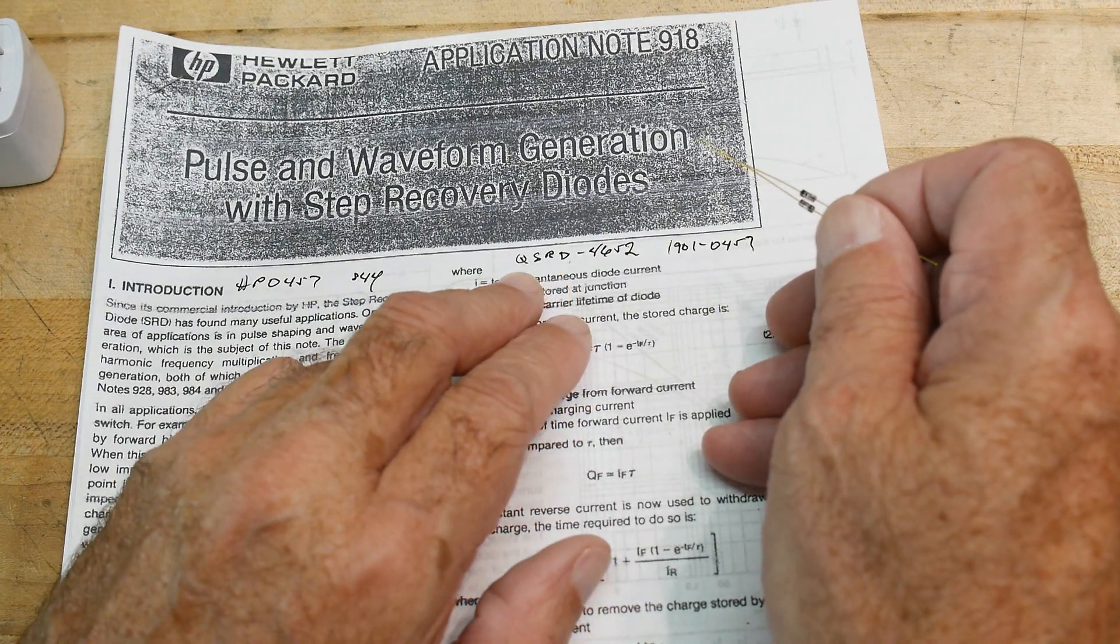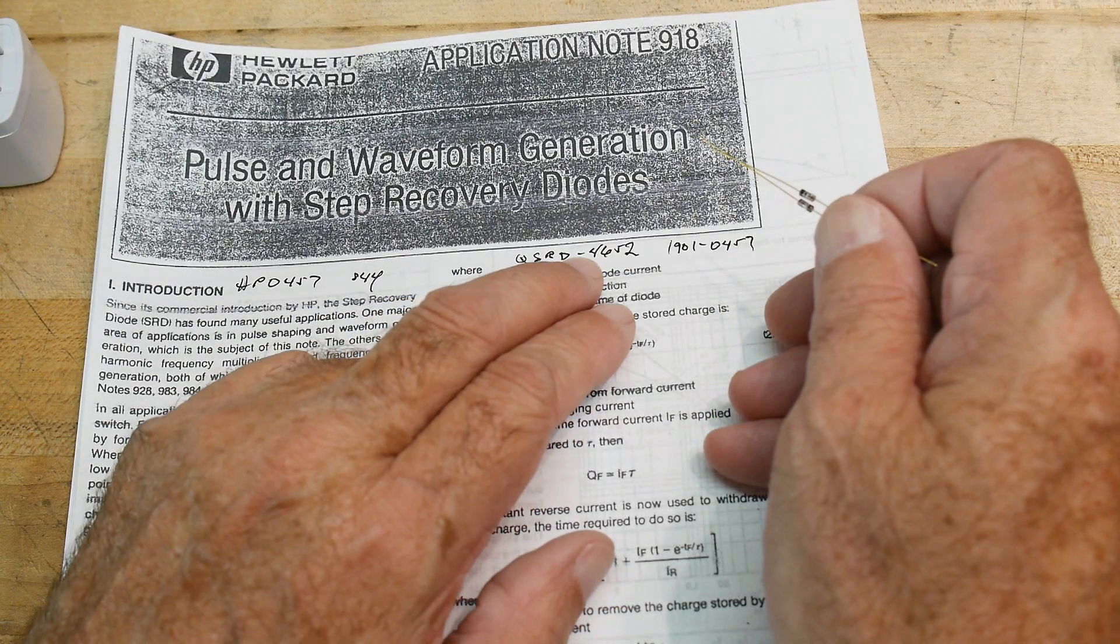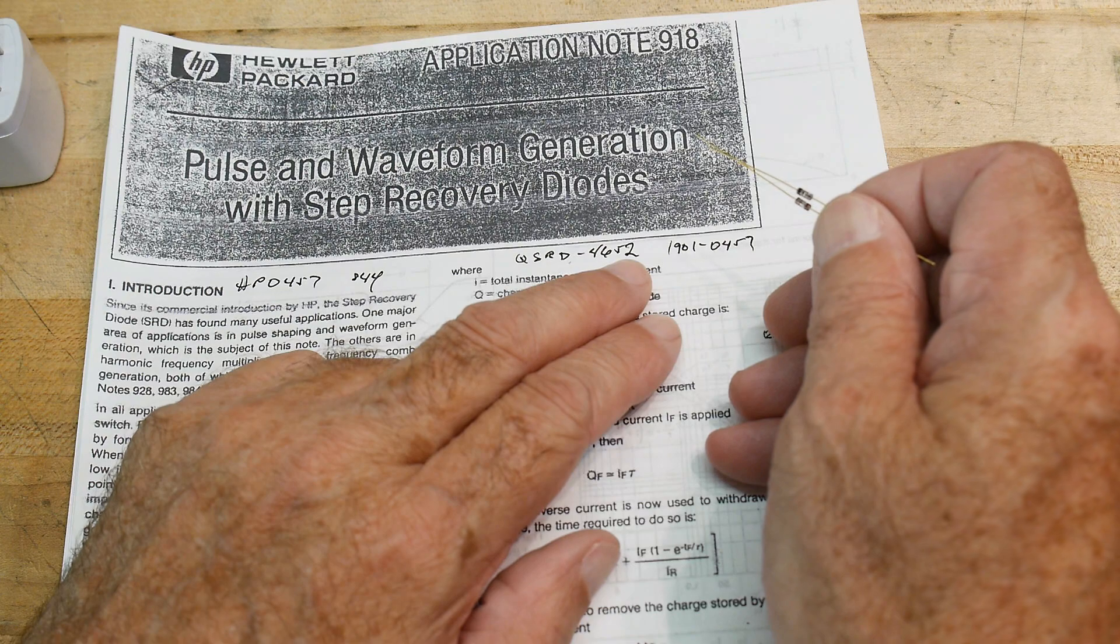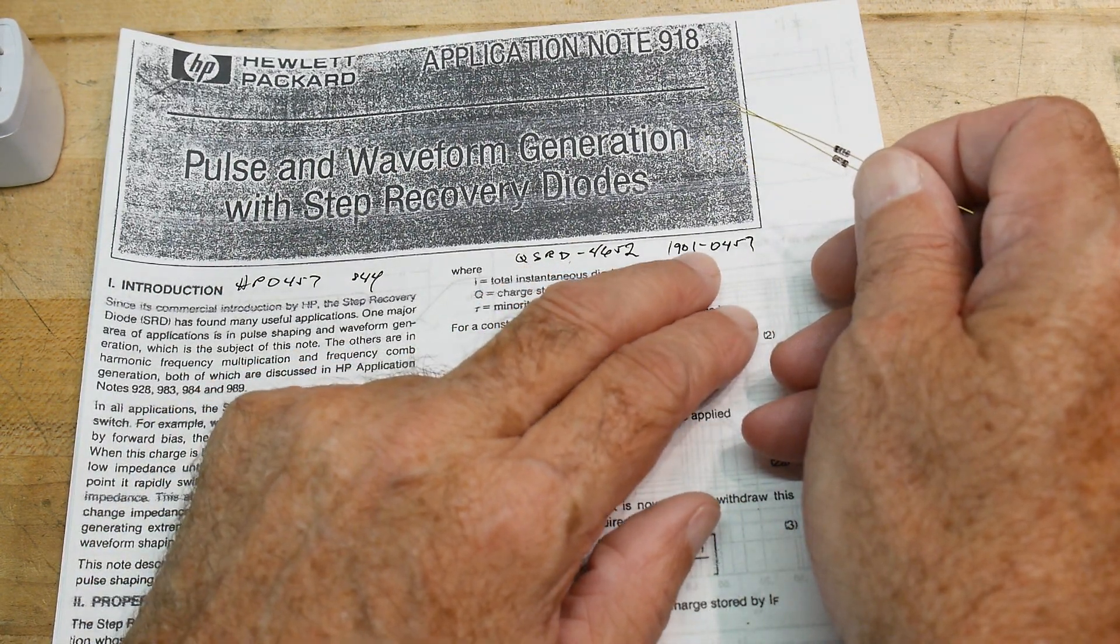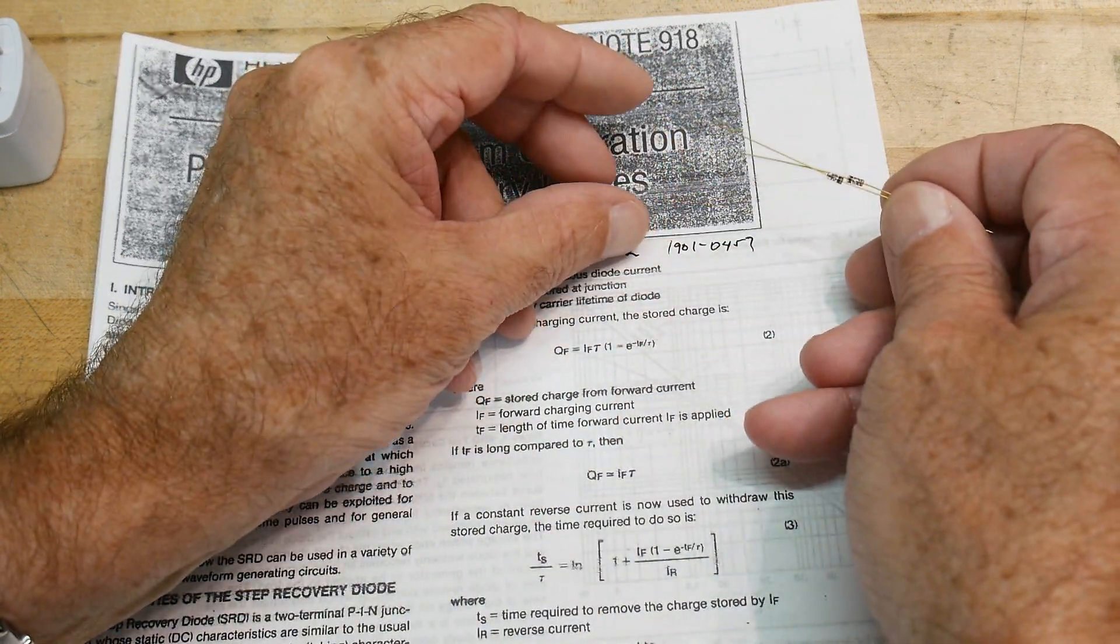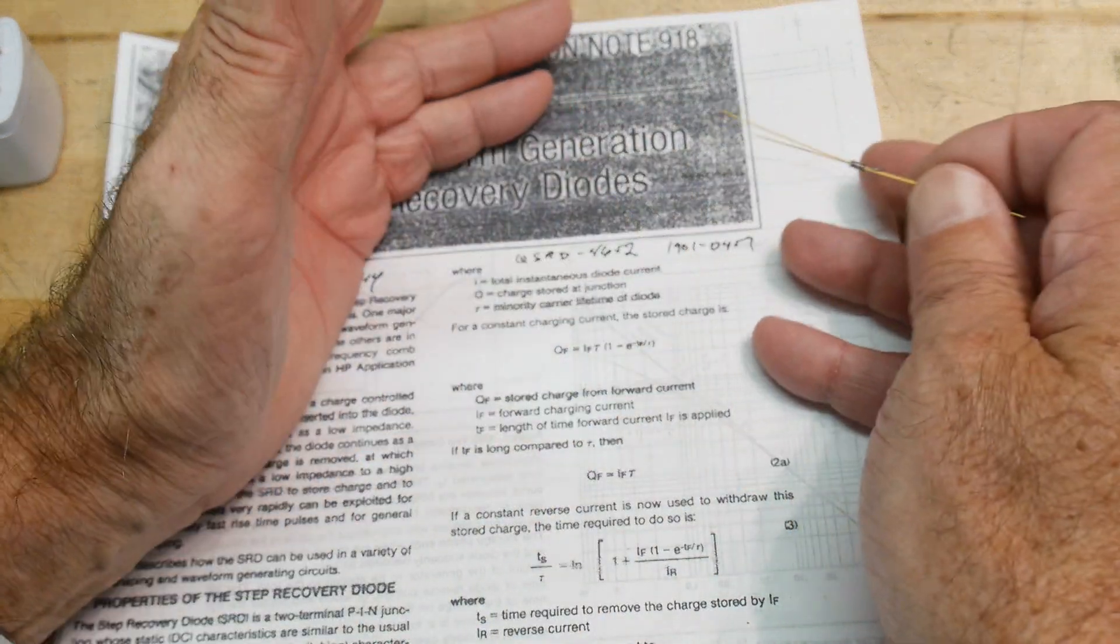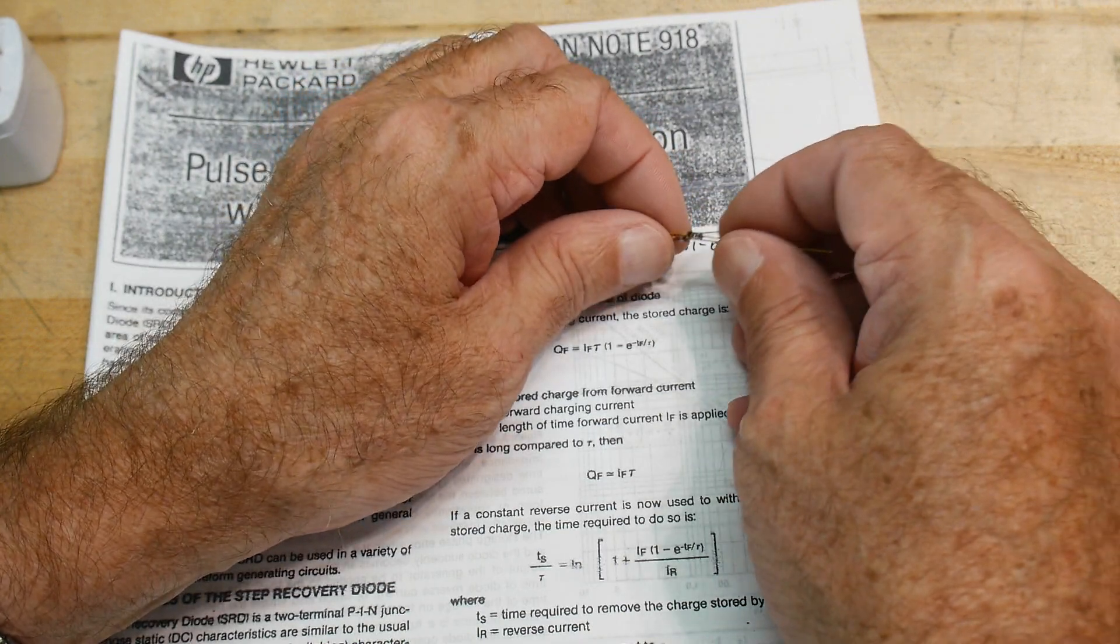That cross-references to a QSRD-4652, and also the HP part number of 1901-0457. So having all of those part numbers didn't do any good. I still couldn't find a darn data sheet for these things.